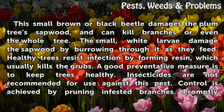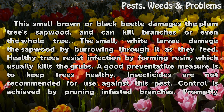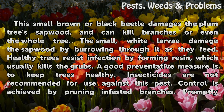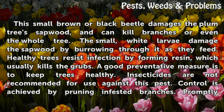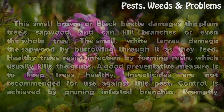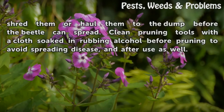This small brown or black beetle damages the plum tree's sapwood and can kill branches or even the whole tree. The small white larvae damage the sapwood by burrowing through it as they feed. Healthy trees resist infection by forming resin, which usually kills the grubs. A good preventative measure is to keep trees healthy. Insecticides are not recommended for use against this pest; control is achieved by pruning infested branches. Promptly shred them or haul them to the dump before the beetle can spread.